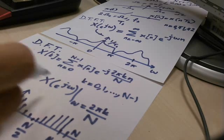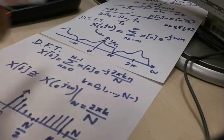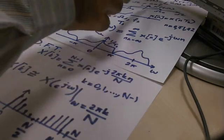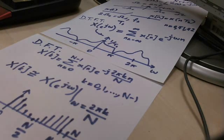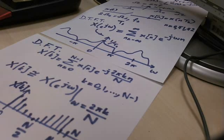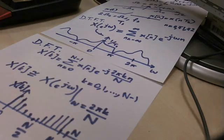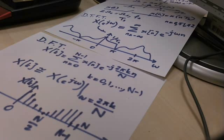So approximately, the shape of this hopefully looks like the shape of the spectrum here or this spectrum up there. And the relation is an approximate relation because I have a finite sum instead of an infinite sum here.